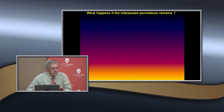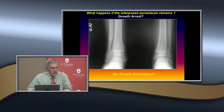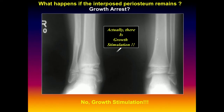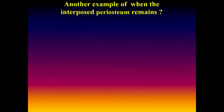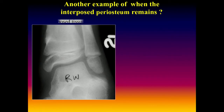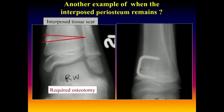If interposed periosteum is missed and left untreated, growth stimulation occurs on the medial side, leading to pathological valgus deformity and overgrowth - not growth arrest. One patient who went untreated developed a valgus deformity and was treated with a closing wedge osteotomy, removing the periosteum that had become scar tissue within the wedge. Leaving periosteum interposed will cause valgus deformity and overgrowth.